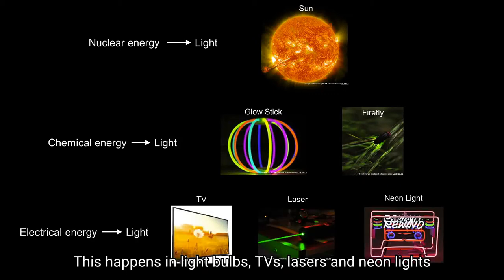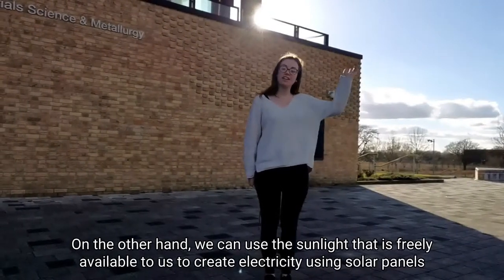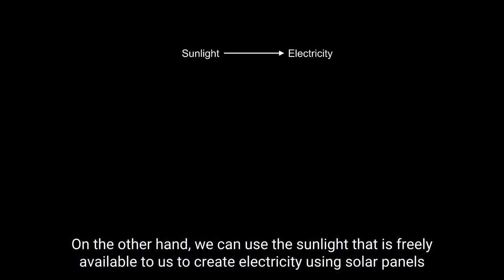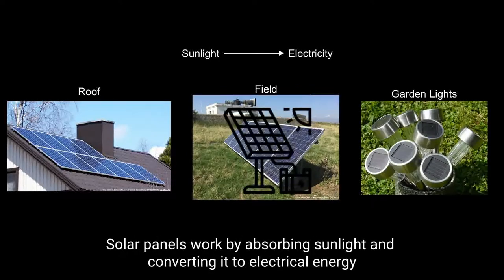This happens in light bulbs, TVs, lasers and neon lights. On the other hand, we can use the sunlight that is freely available to us to create electricity using solar panels — like the dark panels you may have seen on roofs, in fields or in garden lights. Solar panels work by absorbing sunlight and converting it to electrical energy.